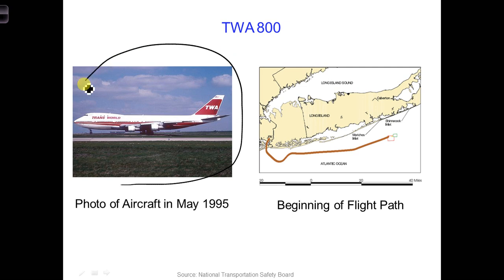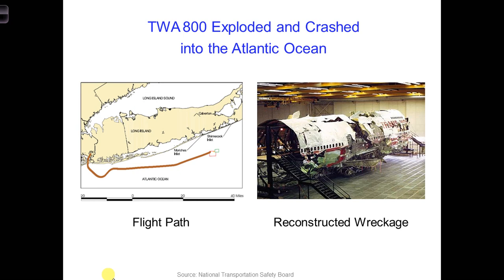Here on the left is an earlier photograph of that aircraft, and on the right side of this slide is a map of the beginning of the flight path for that evening. About 12 minutes into the flight, other pilots in the area reported seeing a large explosion. Later it was confirmed that TWA 800 had exploded and crashed into the Atlantic Ocean. The rectangles at the end of the flight path represent areas where different pieces of the wreckage were recovered. The pieces were used to reconstruct the aircraft so that investigators could study them and try to understand what went wrong.